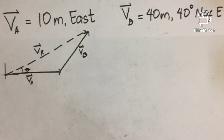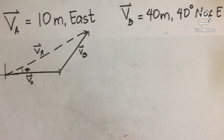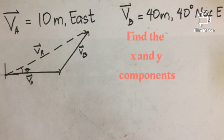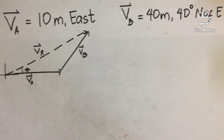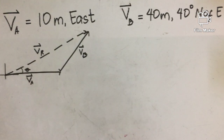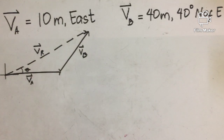The first thing that we need to do in finding the resultant vector of two or multiple vectors is to find first the individual components of each vector. These individual components are the horizontal component and the vertical component. In the previous video, we were able to find out how to break down vectors into different components.